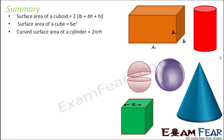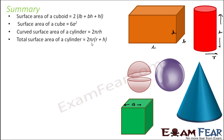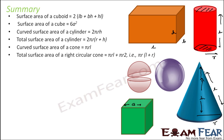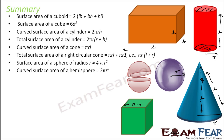The curved surface area of a cylinder is 2πrh, where r is the radius and h is the height. The total surface area of a cylinder is 2πrh + 2πr² = 2πr(r + h), accounting for the two circular bases. The curved surface area of a cone is πrl, where l is the slant height; total surface area of a right circular cone is πrl + πr². The surface area of a sphere is 4πr². The curved surface area of a hemisphere is 2πr², and the total surface area of a hemisphere is 2πr² + πr² = 3πr².